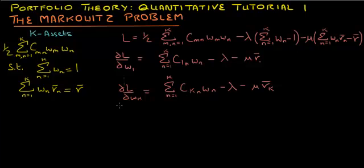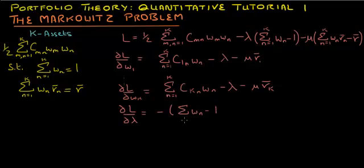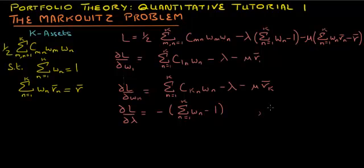We also take the derivative with respect to parameters lambda and mu. Taking the derivative with respect to lambda gives us the negative of the first constraint — that the sum of weights of all securities in the portfolio must equal 1. The derivative with respect to mu gives us the negative of the second constraint.